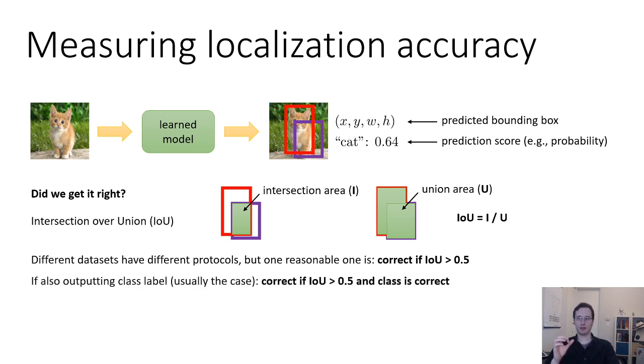Now, if we are also outputting the class label, which is usually the case, we would say we're correct if the IOU is greater than 0.5 and the class is correct. Now, crucially, this is not a loss function. We don't actually train our network with respect to IOU. This is just an evaluation standard. It's a convention in the community that people use to evaluate their models. We don't actually train with IOU because IOU is difficult to optimize through. We train with other metrics, which I'll discuss a bit later.